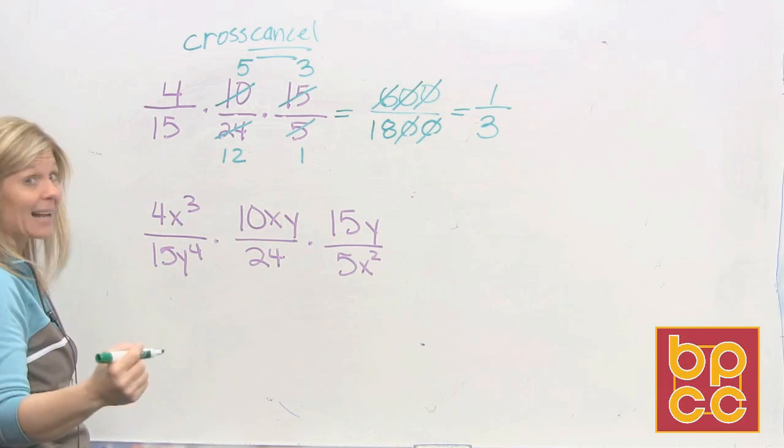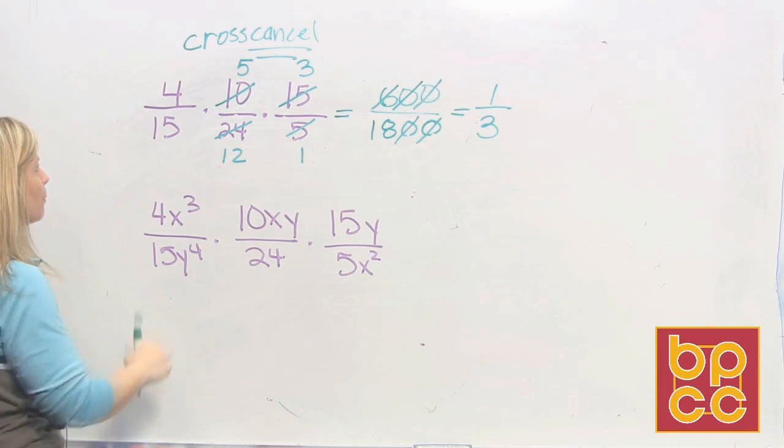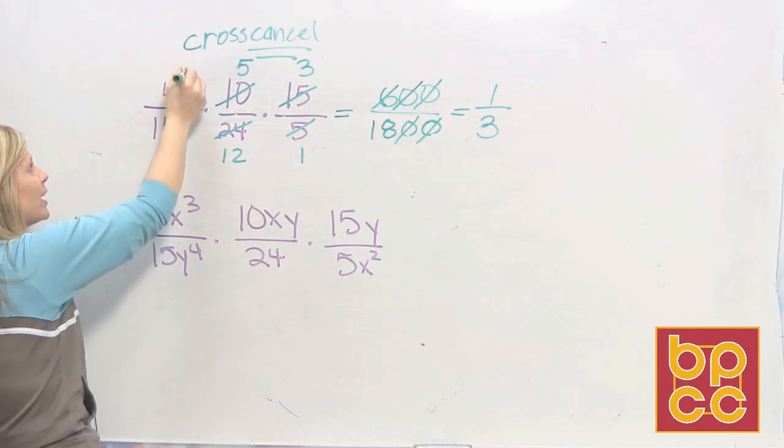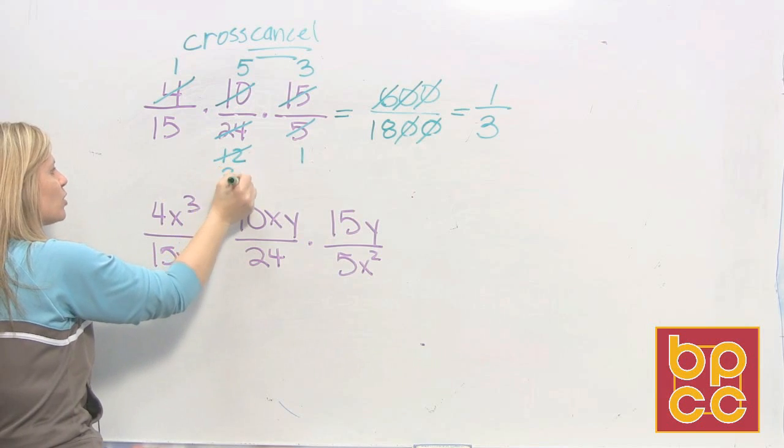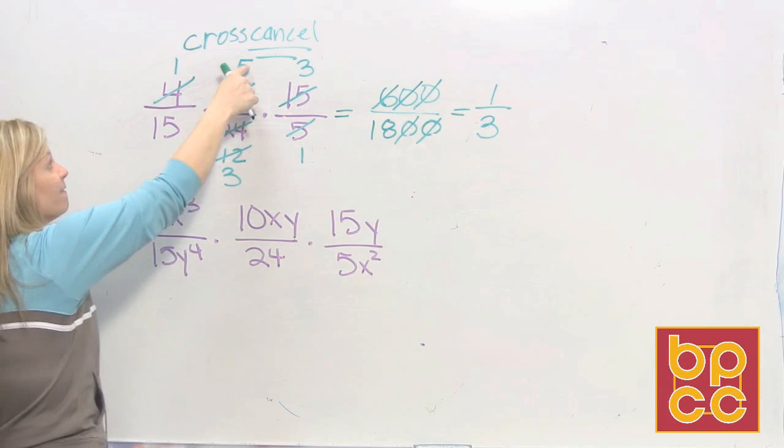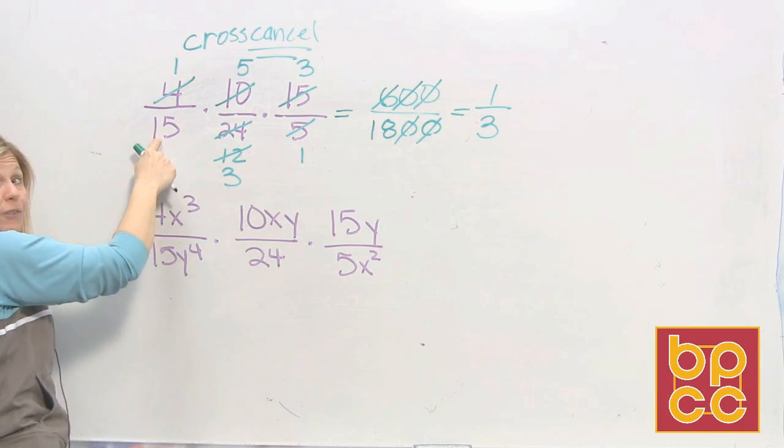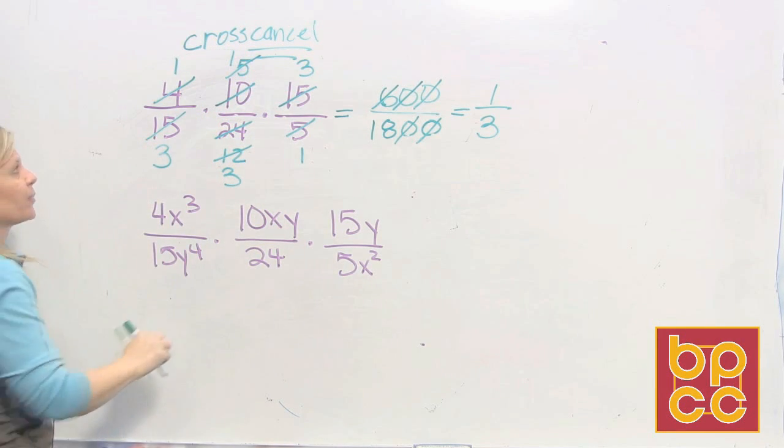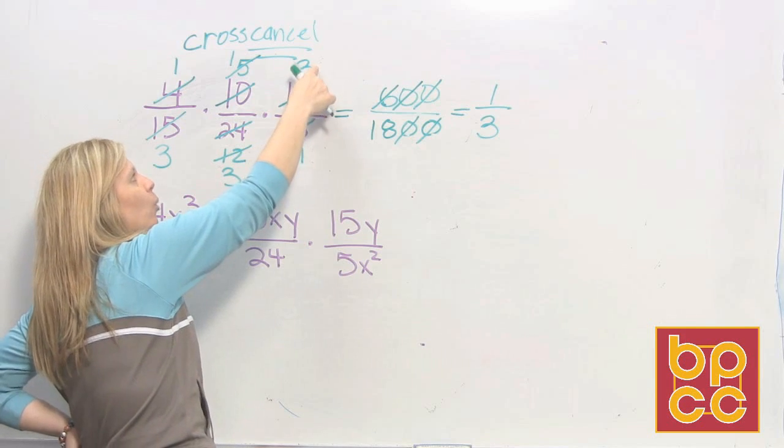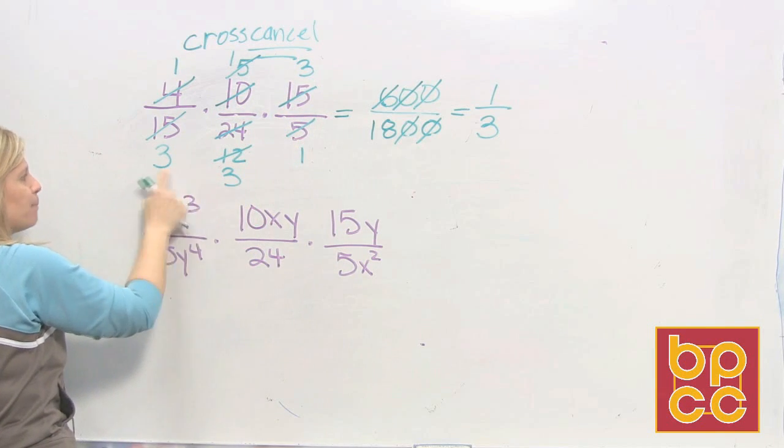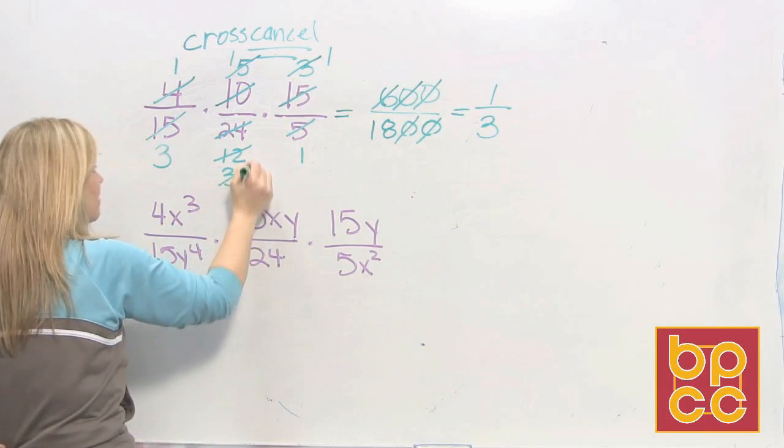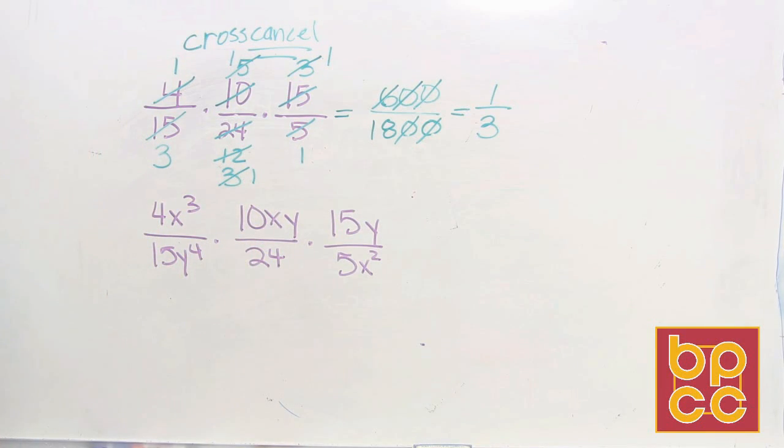But I'm not done. I can also do this diagonally. That's where the word cross comes from. What can we divide 4 into? 12. How many 4s go into 12? 3. So 4 divided by 4 is 1. 4 goes into 12 three times. What can I divide 5 by? 5 divided by 5 is 1, 5 goes into 15 three times. This numerator is a 3. 3 divided by 3 is 1, 3 divided by 3 is 1.